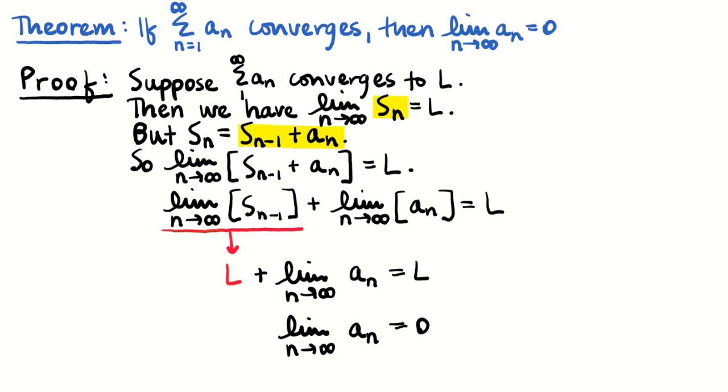Now, if I know that if a series converges, then the limit of its terms goes to zero, I can say that if I know the limit of the terms is not zero, I know the series diverges. And that's the nth term test for divergence. Thanks for watching.